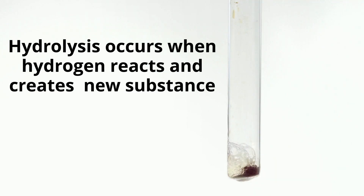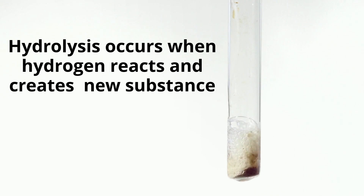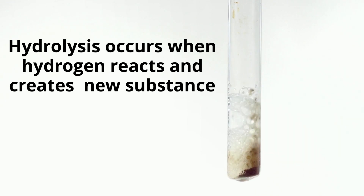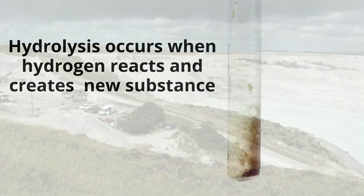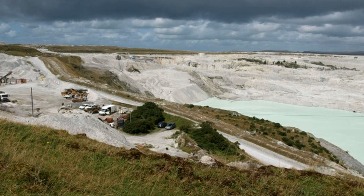Hydrolysis occurs when hydrogen or hydrate replaces the ion and creates a new substance. For example, hydrolysis causes feldspar to turn into clay.